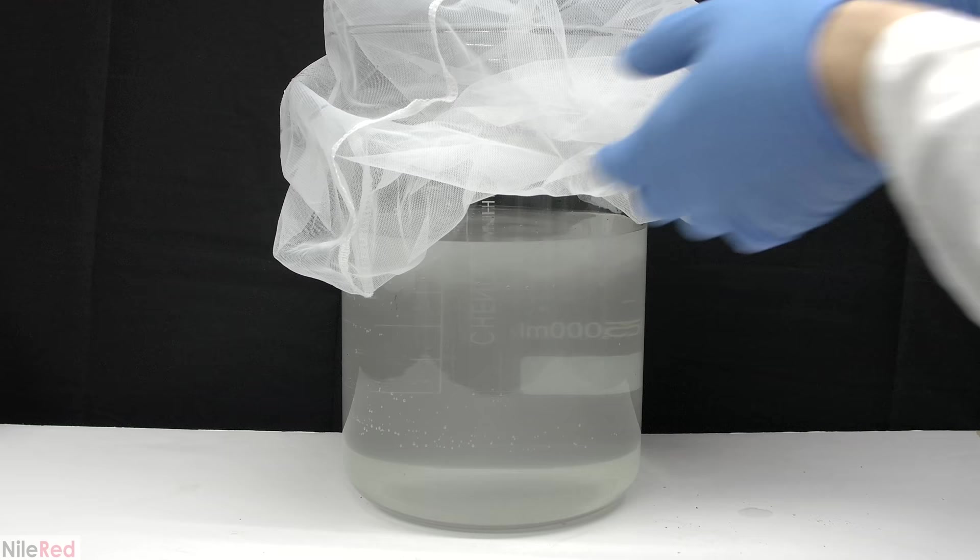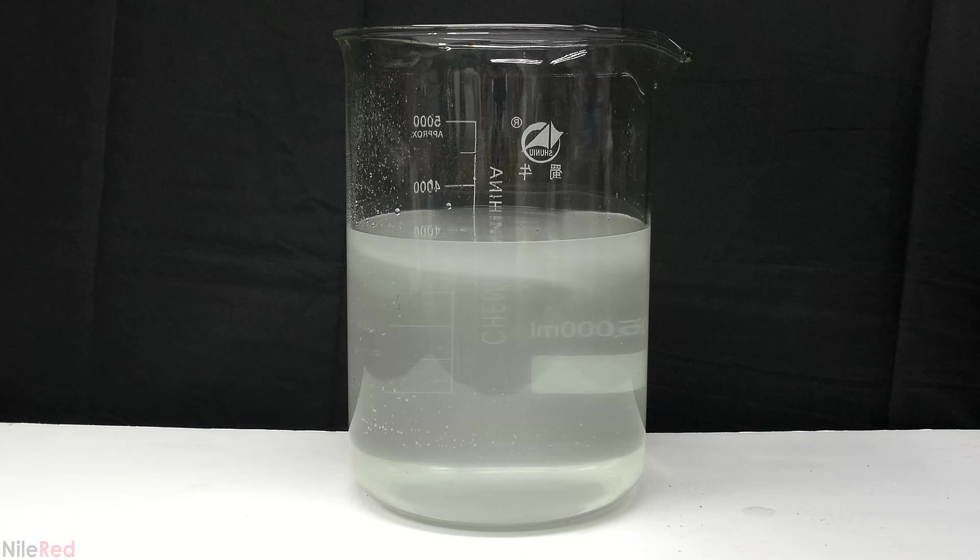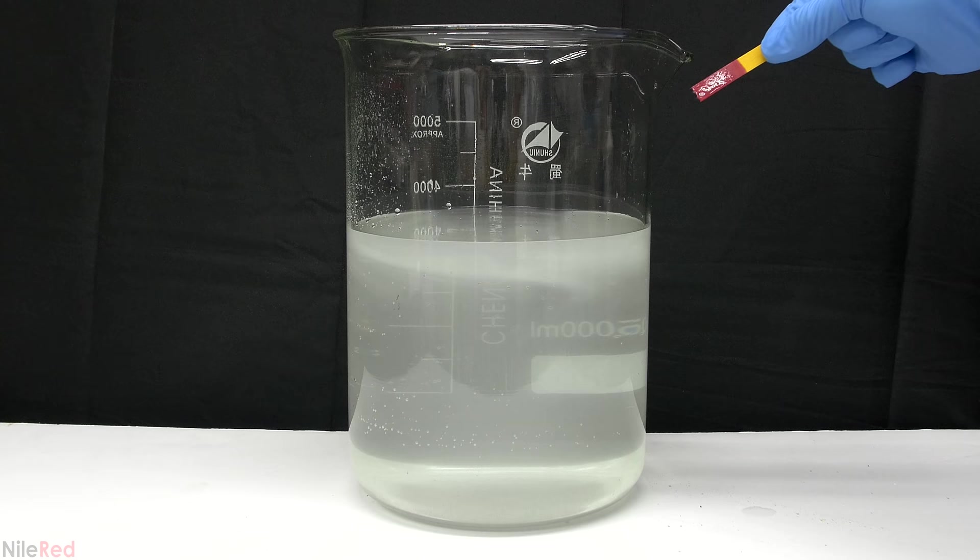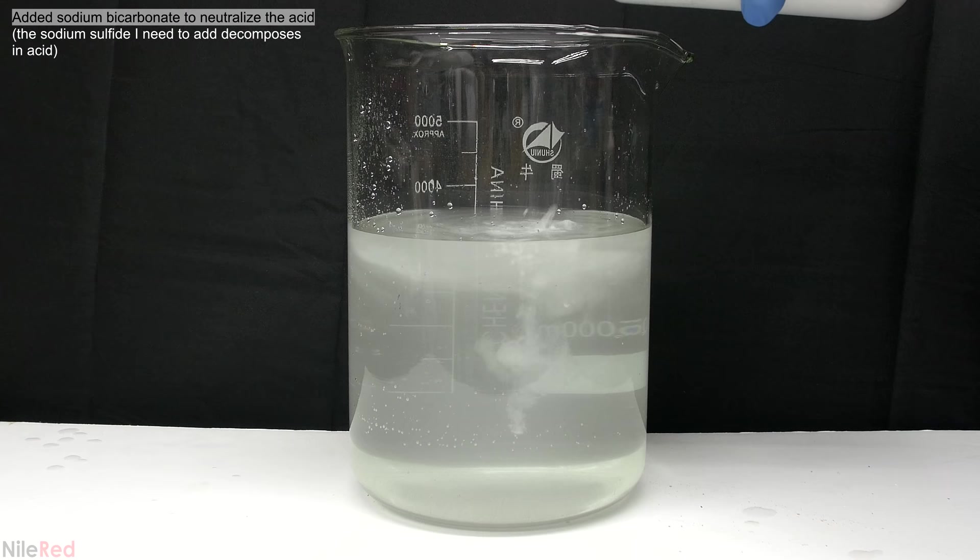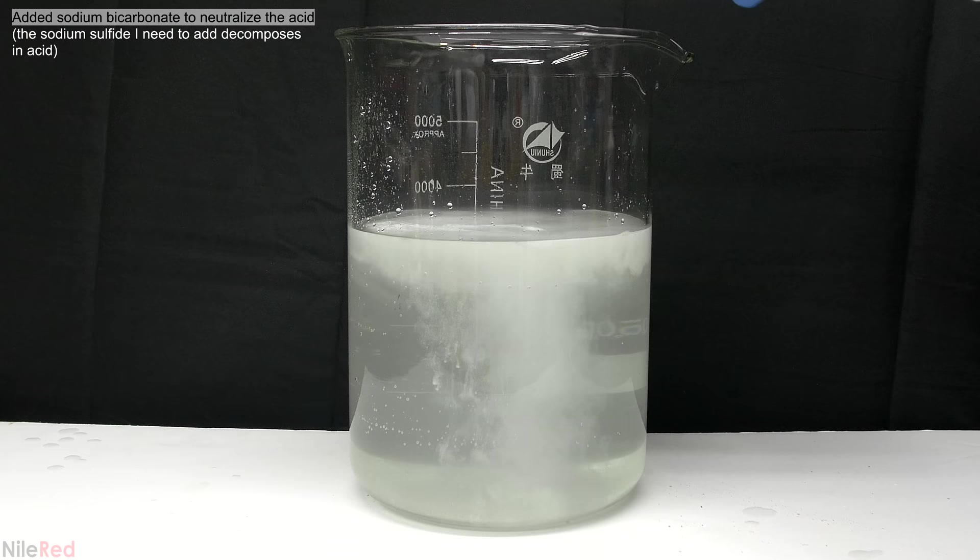The nylon mesh was removed, and I test the pH using a universal pH paper. The paper turns red, which indicates that I have a strongly acidic solution. Sodium sulfide breaks down extremely quickly in the presence of acids, so I need to neutralize things before I add it. To do this, I just used a bunch of sodium bicarbonate.